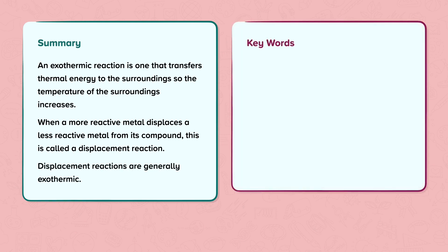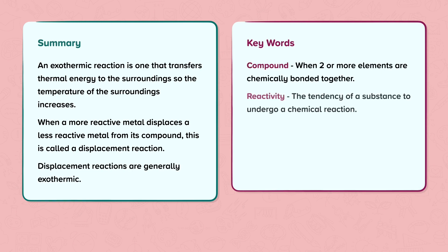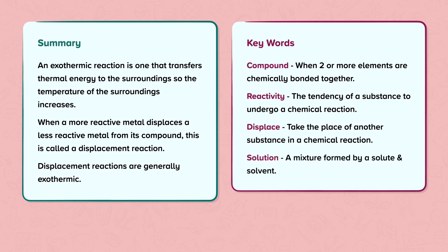Key words: Compound - When two or more elements are chemically bonded together. Reactivity - The tendency of a substance to undergo a chemical reaction. Displace - Take the place of another substance in a chemical reaction. Solution - A mixture formed by a solute and solvent.